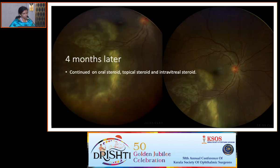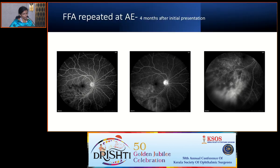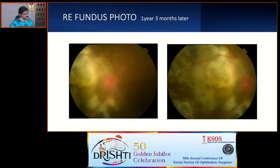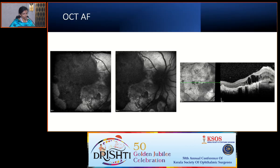On follow-up, the lesion was encroaching more towards the macular region with different stages — healed peripheral lesions and active lesions extending to the macula. Blood investigations were repeated and FFA was repeated at Arvindai showing early hypo and late hyper picture. One year and three months later, she came to us again with the entire macular region and posterior pole involved, active disc hyperemia, and disc edema.